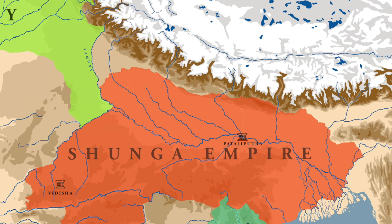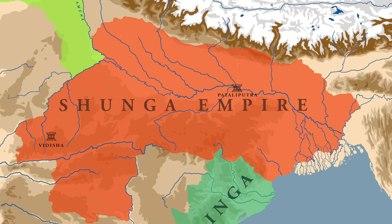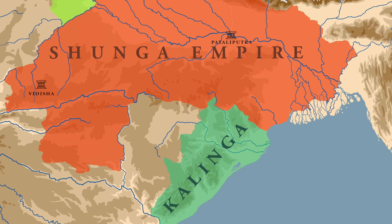Apart from the Greeks, there was also a serious threat to the Shunga realm coming from the south. The kingdom of Kalinga, conquered by Ashoka, had gained independence during the end of the later Mauryan period, and under king Kharvel it became a serious threat to the Shungas. However, some scholars do not believe that the period of Kharvel and the period of Pushyamitra Shunga were the same, and this remains a highly debatable topic.